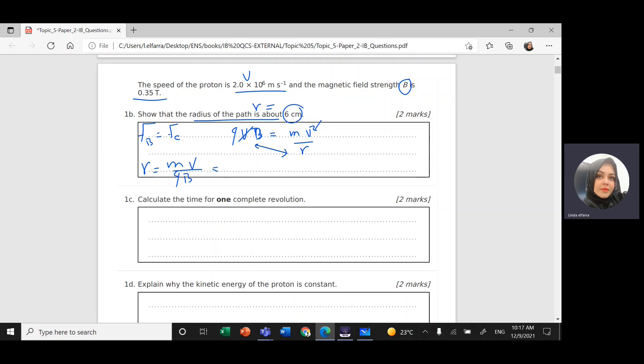Mass of proton, you can find it in your data booklet, 1.67 times 10 to the power negative 27. Velocity of the proton is 2 times 10 to the power 6, divided by 1.6 times 10 to the power negative 19. This is the charge of proton, the same as the charge of the electron, times magnetic field 0.35 tesla.